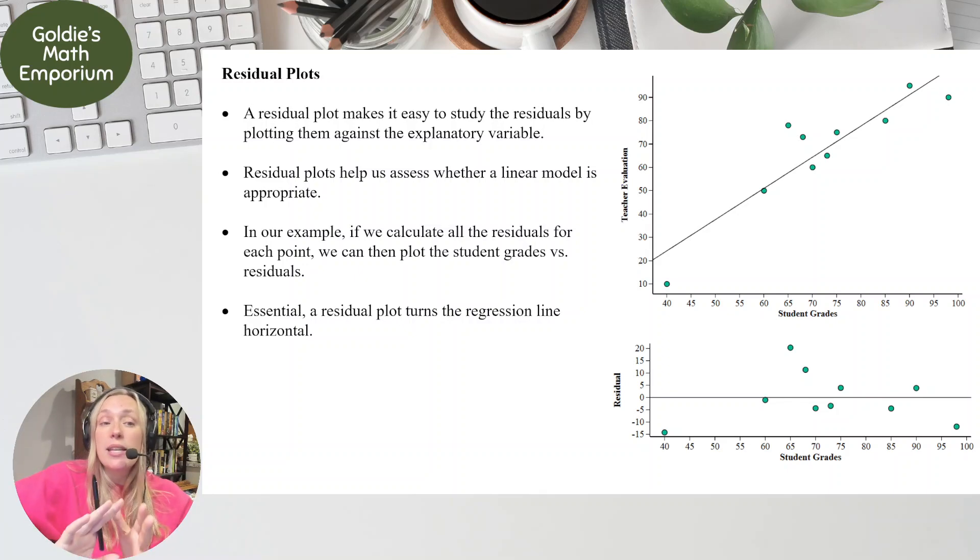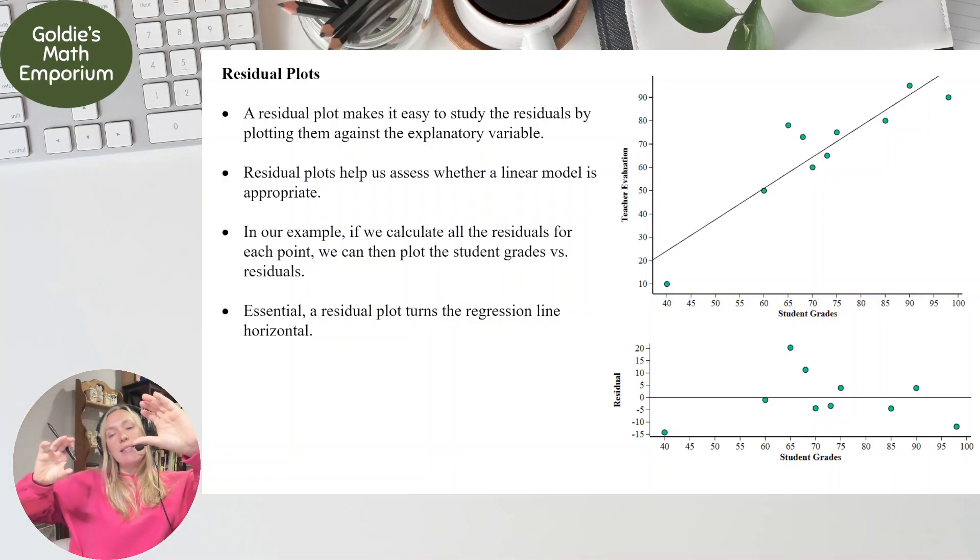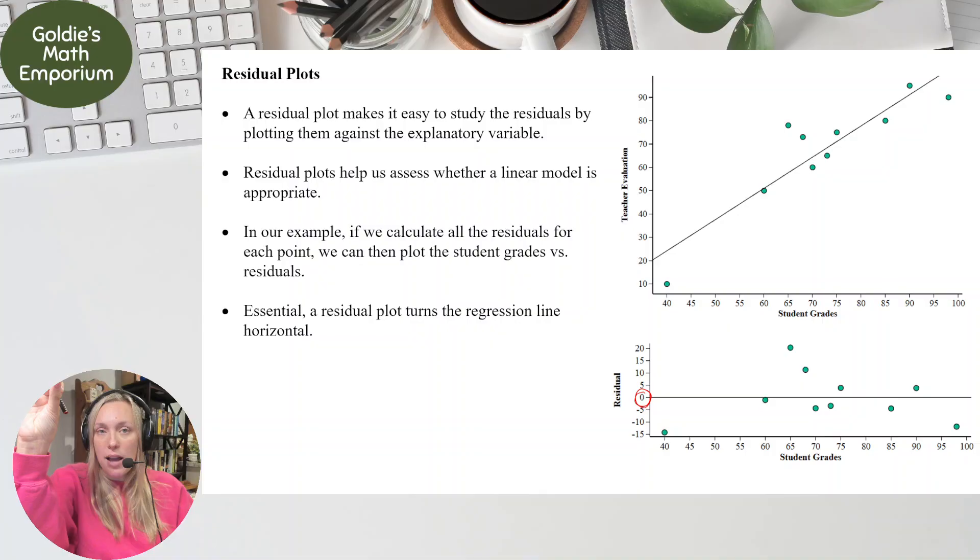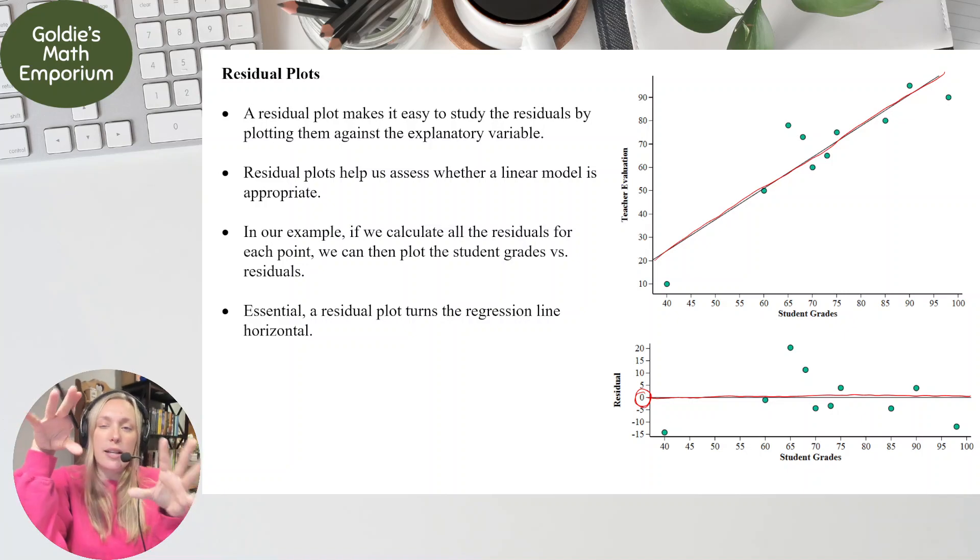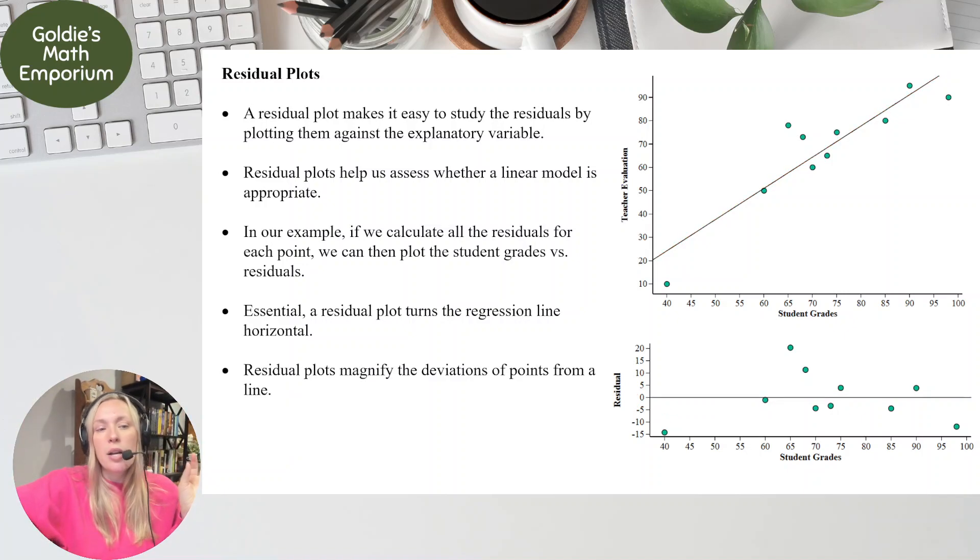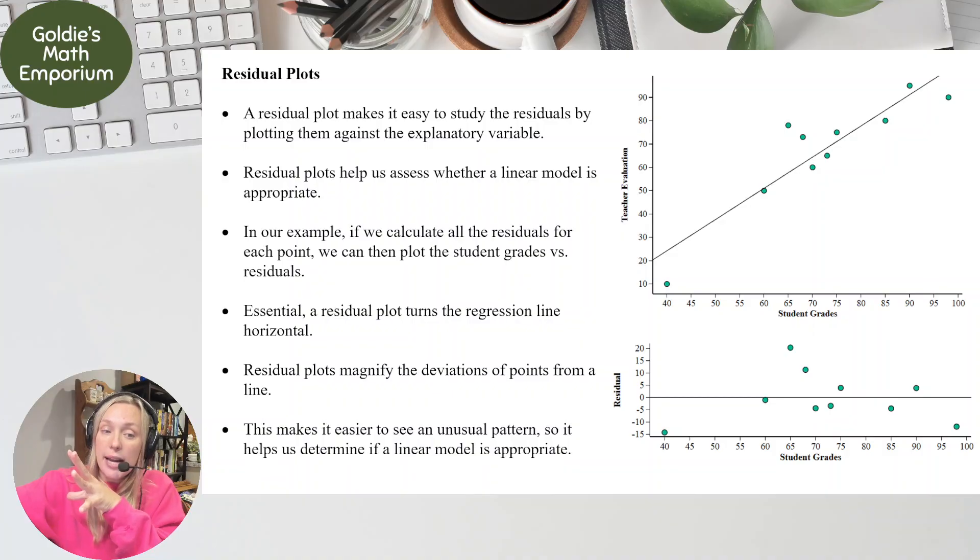And essentially, visually, the residual plot turns the regression line horizontal. So if you can kind of visualize that, because a residual of zero means that the point was exactly on the line. If there's no residual, the difference between observed and predicted was zero. That means they were the same value. So that's why a residual of zero, this line right here, represents our least squares regression line just turned horizontally. And I want you to kind of visualize that, and hopefully you can see that. And the residual plot, it does magnify those vertical deviations from the line. And that makes it easier to see an unusual pattern to help us determine if a linear model is appropriate.